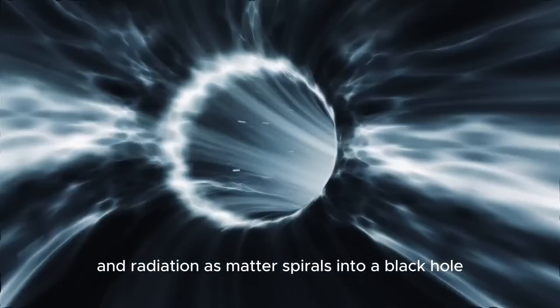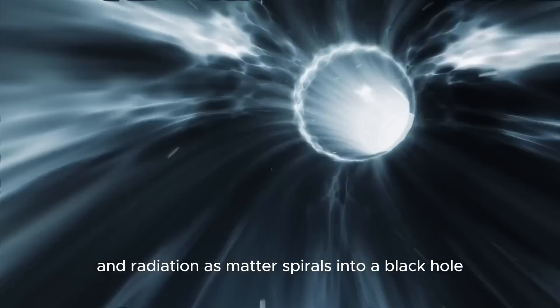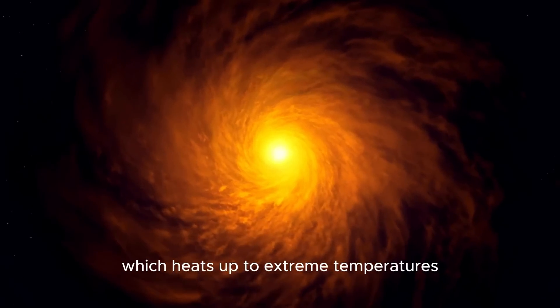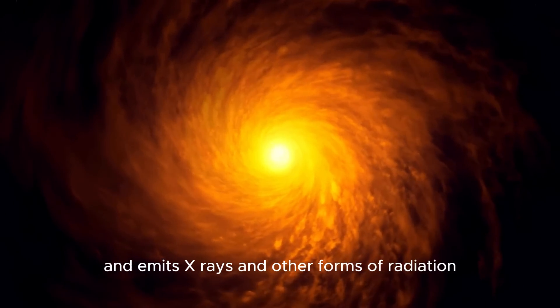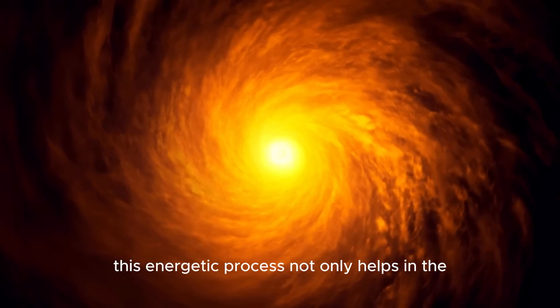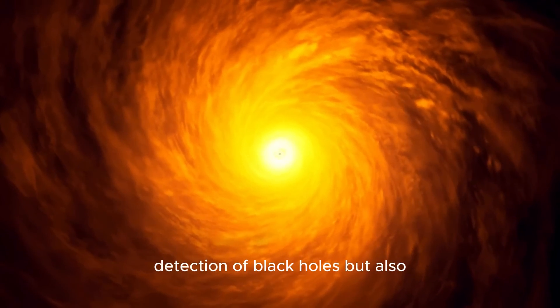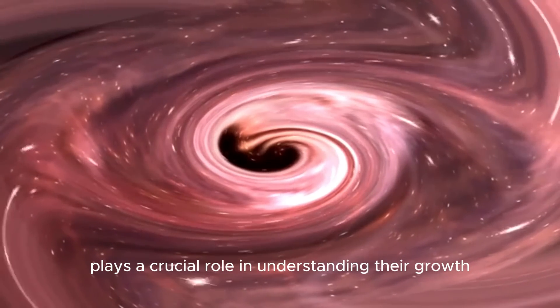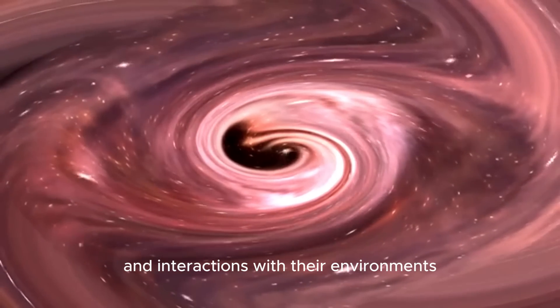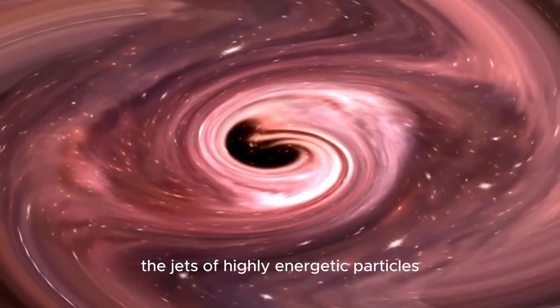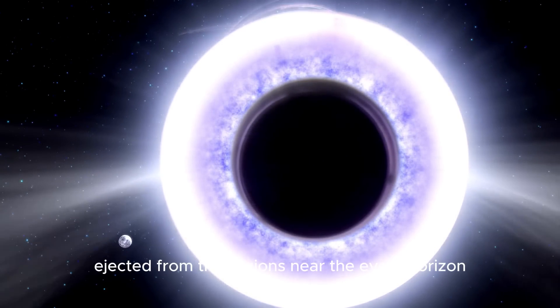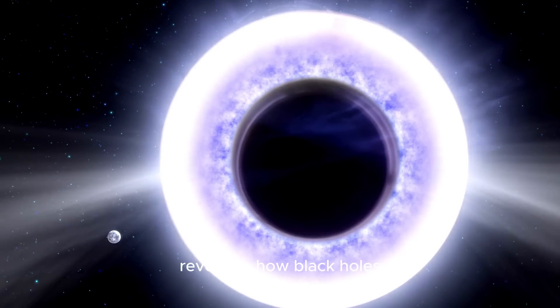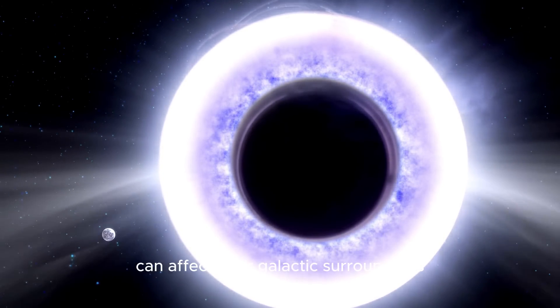One of the most intriguing aspects of black holes is their influence on surrounding matter and radiation. As matter spirals into a black hole, it forms an accretion disk, which heats up to extreme temperatures and emits x-rays and other forms of radiation. This energetic process not only helps in the detection of black holes, but also plays a crucial role in understanding their growth and interactions with their environments. The jets of highly energetic particles ejected from the regions near the event horizon are another area of intense research, revealing how black holes can affect their galactic surroundings.